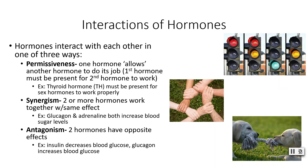Because we have so many hormones released at various times, they interact with each other in one of three ways: permissiveness, synergism, and antagonism. If two hormones act in a permissive manner, one hormone allows the other to do its job — for example, thyroid hormone must be present for sex hormones to work properly. If two hormones work synergistically, they work together toward the same effect — for example, glucagon and adrenaline (epinephrine) both increase blood sugar levels through different target cells and mechanisms. Lastly, if two hormones are antagonistic, they have opposite effects — insulin decreases blood glucose while glucagon increases it.